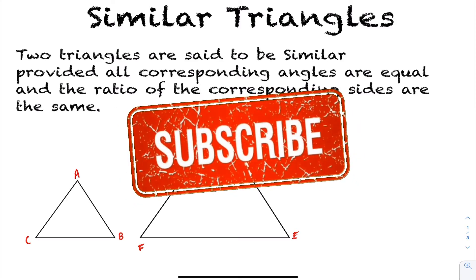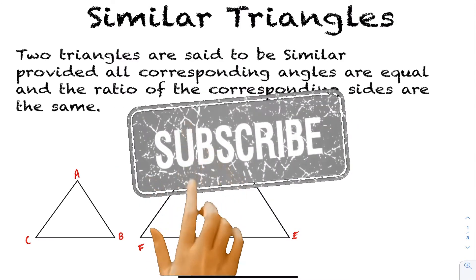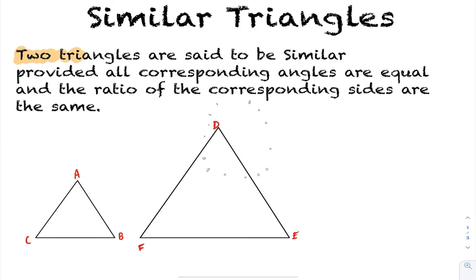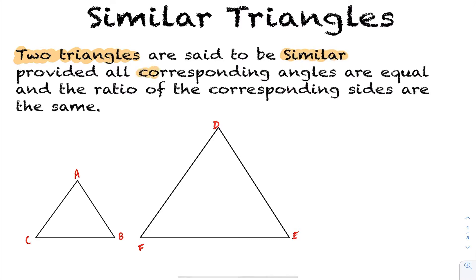We're going to be taking a look at similar triangles today. What similar triangles are — by definition — two triangles are said to be similar provided that the corresponding angles are equal, and the ratio of their corresponding sides are also the same.